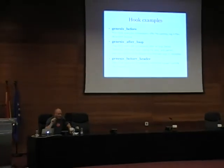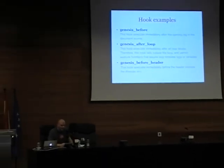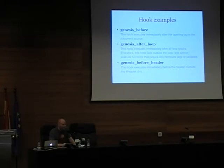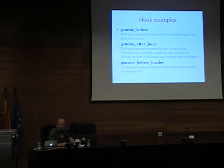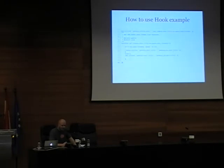You probably know that in your header you have wp_head. That's where you add stuff like Google Analytics. Genesis before_header is what it says — this hook executes immediately after the opening tag in the document source. genesis_after_loop executes right after the loop, and that's a place you can use. If you need to output code or change something there, that would be the place. And genesis_before_header — I gave you that example earlier — is used when you want to move the navigation up.